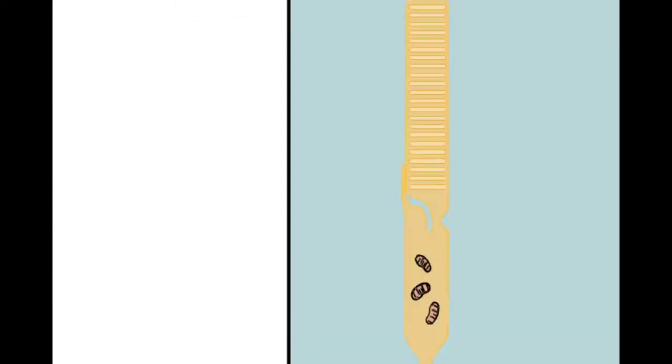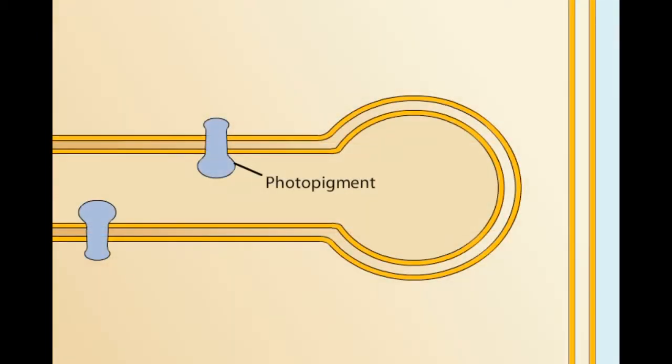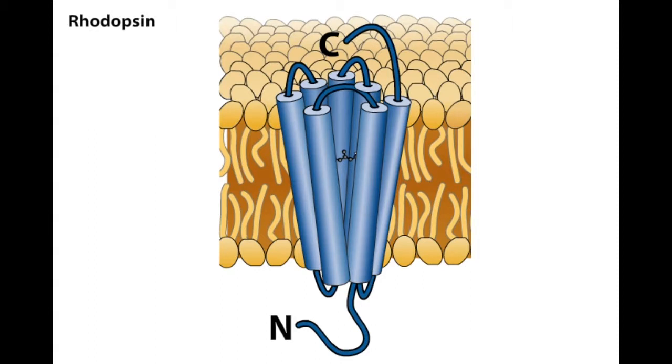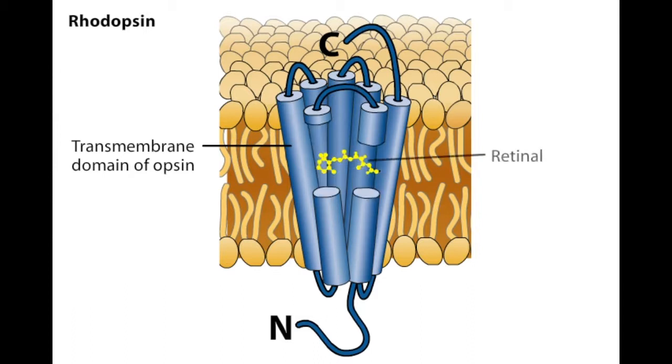The photopigments lie within the disc membranes of the outer segments. In rods, the photopigment is called rhodopsin. The seven transmembrane domains of the protein portion of the molecule, called opsin, traverse the membrane bilayer. The opsin forms a pocket in which the light-absorbing portion of the photopigment, a molecule called retinal, resides.